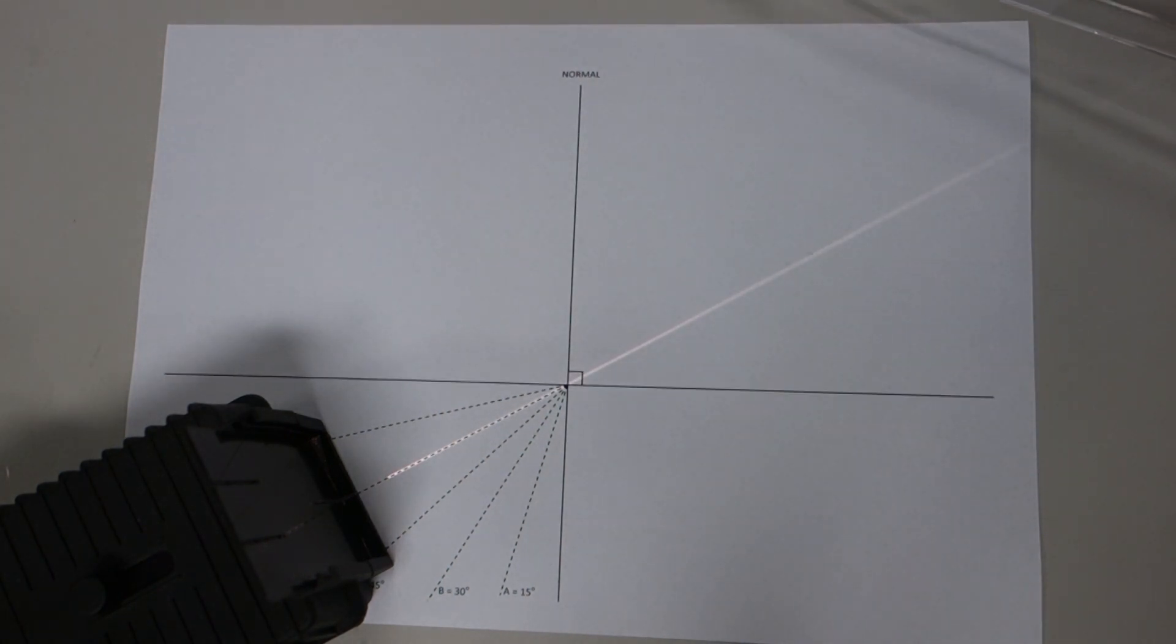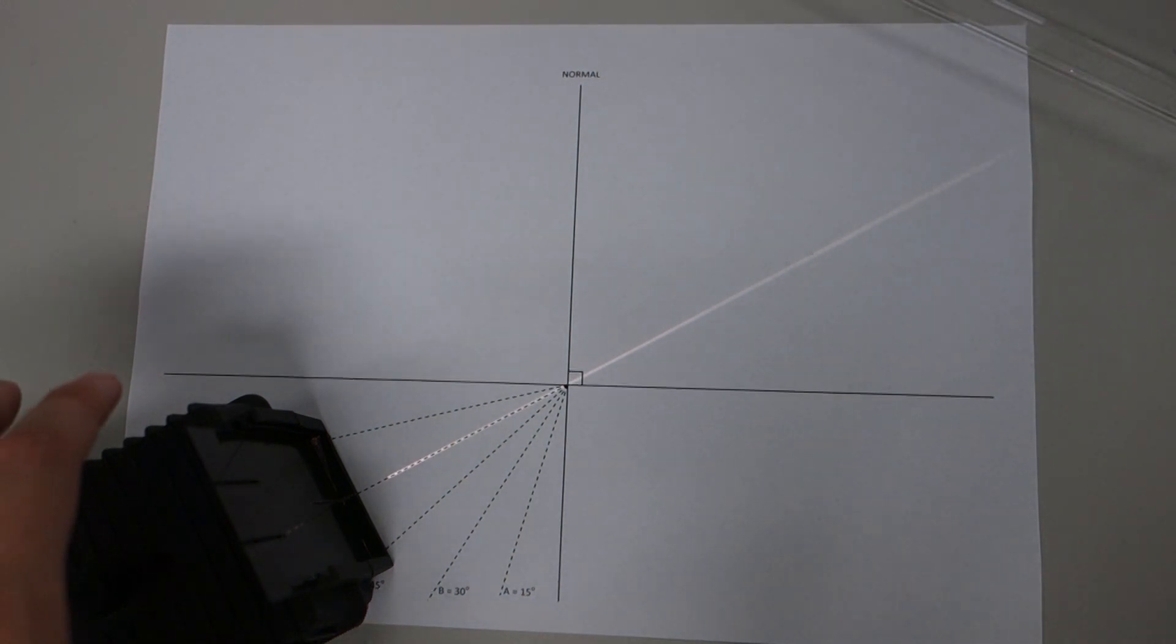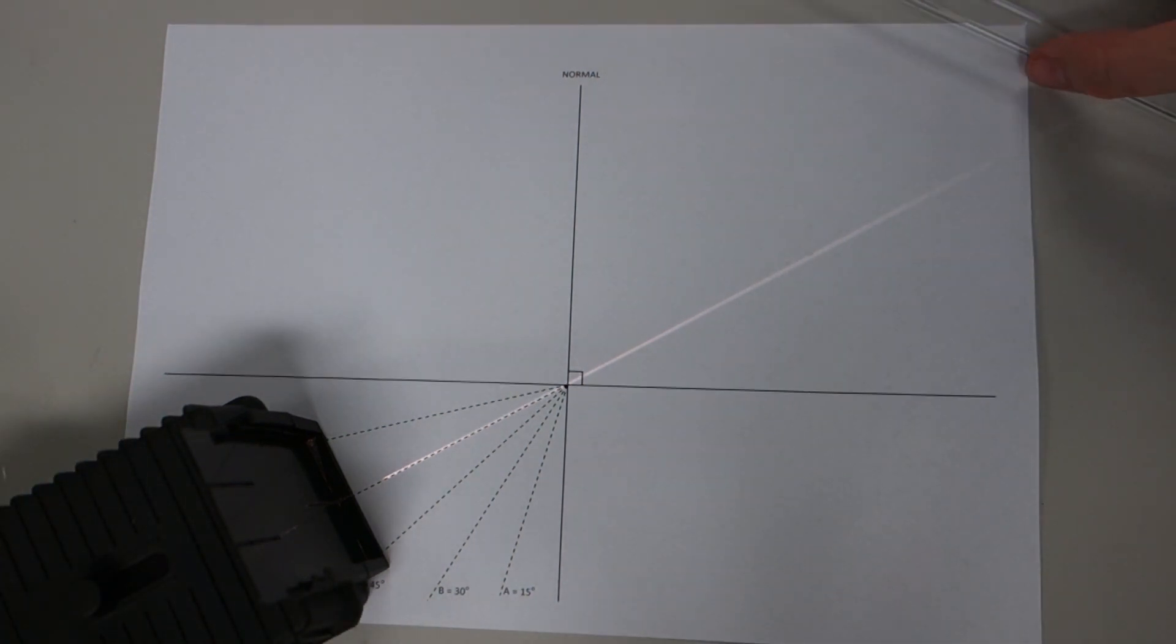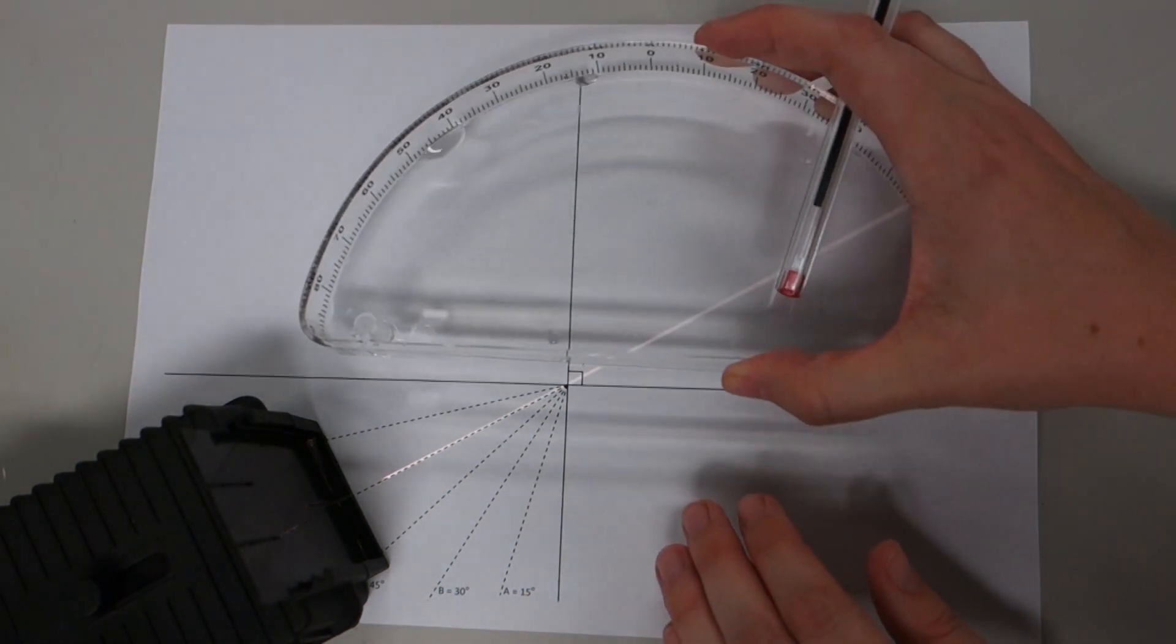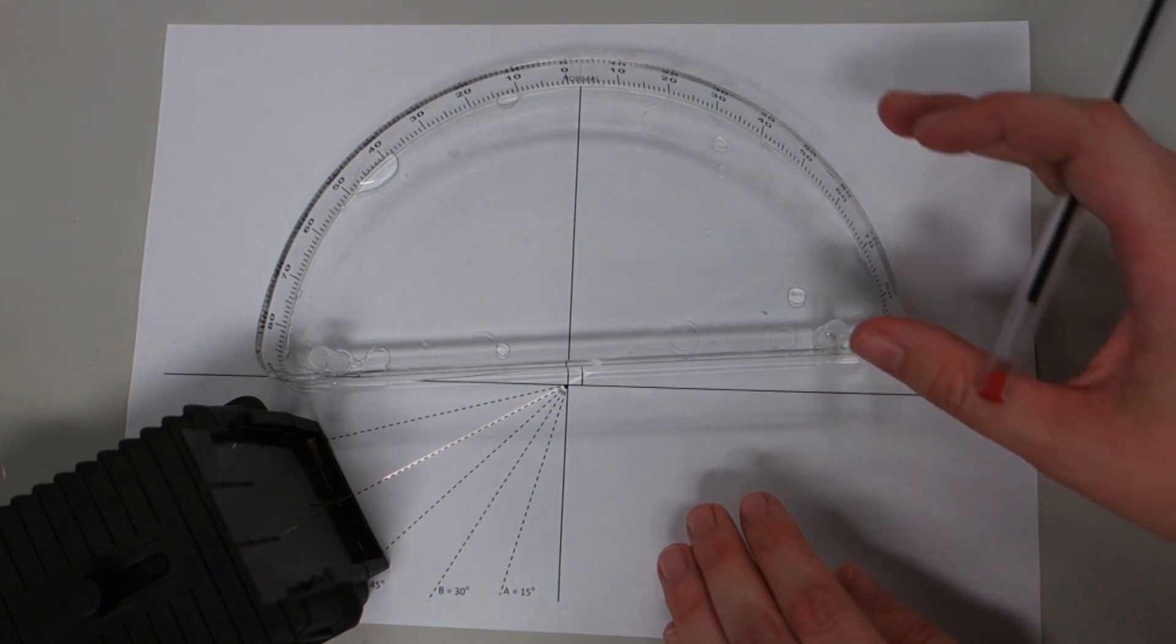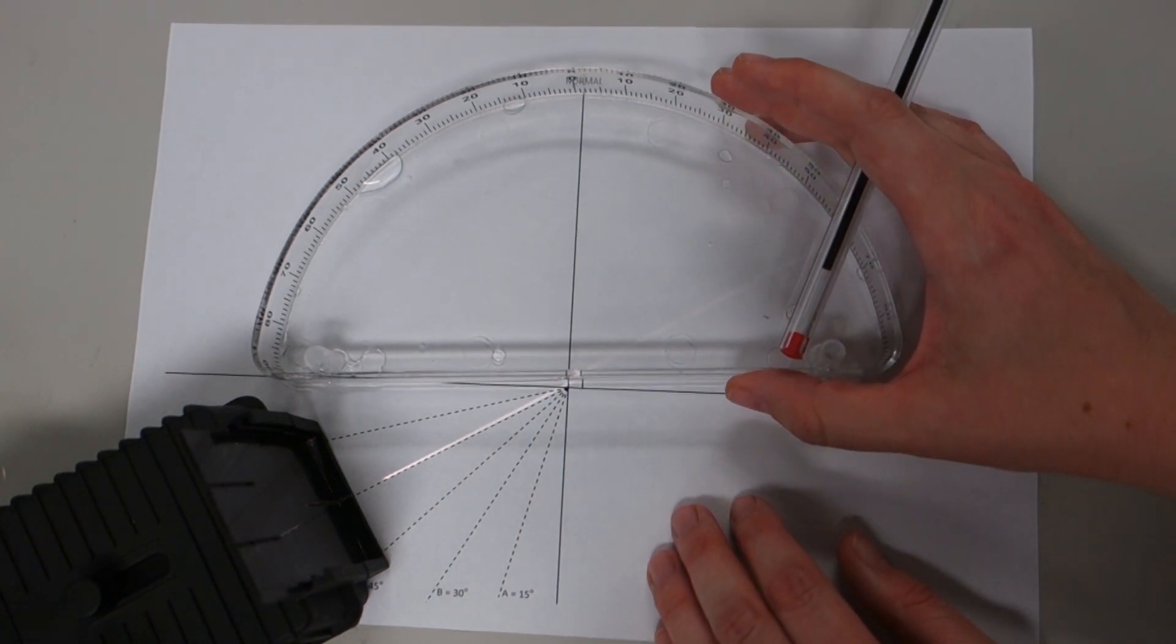Start by taking your light box, and a word of caution here, your light box over time will get very hot, so make sure that you don't touch near the bulb where it gets hot. Start by taking your light box and making sure it's lined up with one of these dotted lines here, pointing towards the normal line.